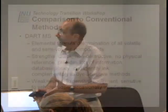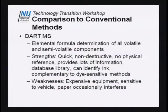Comparing to DART: you get the elemental formula and maybe even the identity of components in the ink. It's basically limited to volatile and semi-volatile components — DART doesn't do pigments either, because they don't evaporate. Strengths: very quick, non-destructive, no physical reference necessary — all you need is a database. Provides lots of information. You can identify the ink. And it's complementary to the other techniques, since it's working with volatiles and semi-volatiles, it doesn't see a lot of the dye. So it complements the others that look at dye spots or color.